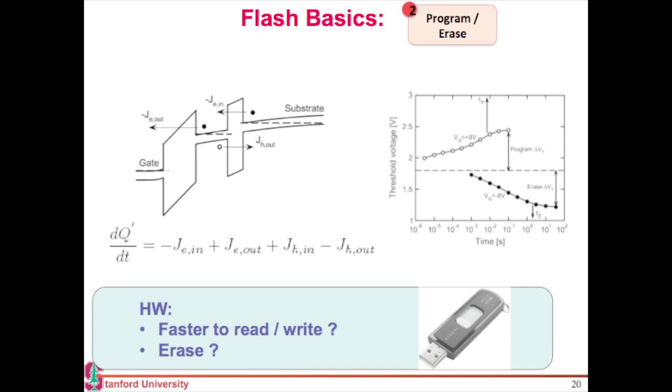This is the simple equation that your charge is essentially just the build-up integration of these different currents tunneling in and out. And this is how a typical transient of threshold voltage looks like. If you apply a fixed gate voltage, your charge builds up over time, and you can achieve a high VT when programming, or a negative VT if you're erasing. This difference between your program and erase VT is your total program window.